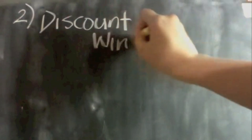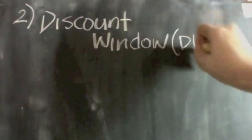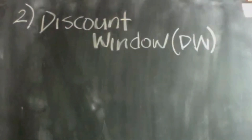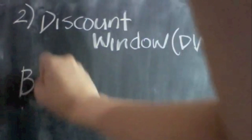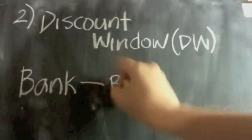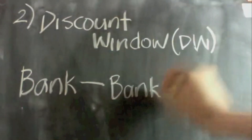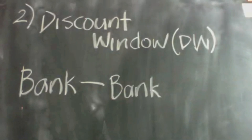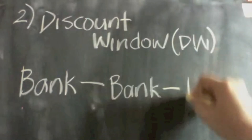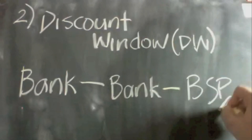The second monetary tool that the BSP uses is the Discount Window, or DW. The Discount Window defines the characteristic of the BSP as the lender of last resort. For example, a certain bank needed to borrow funds from another bank. However, it can no longer find another bank to borrow from, so in the end, it turns to the BSP.